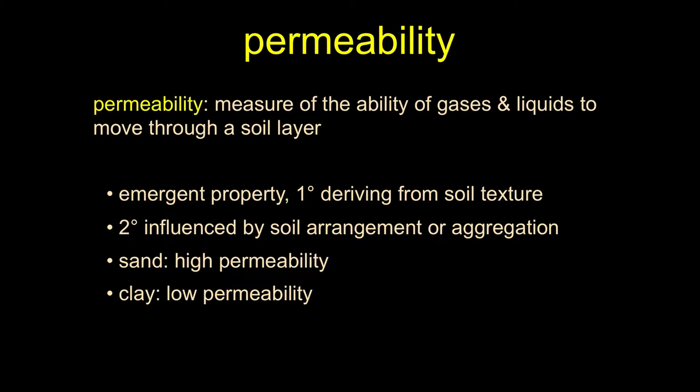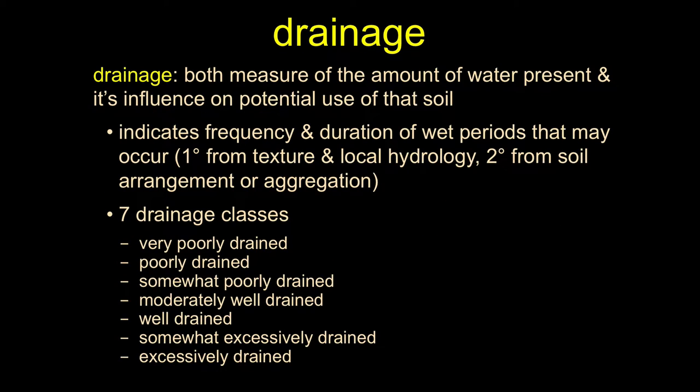Secondarily, permeability is influenced by larger pebbles and things inside the soil. Sand has high permeability — pour water in the top of a tube of sand and it quickly pours out the bottom. Clay, in contrast, has low permeability — water won't flow through; it stays on the surface. Also related is drainage, which is key for wetland concerns.